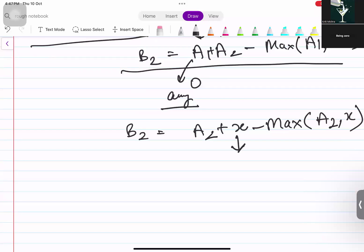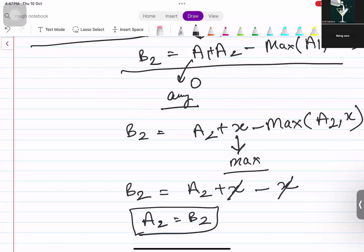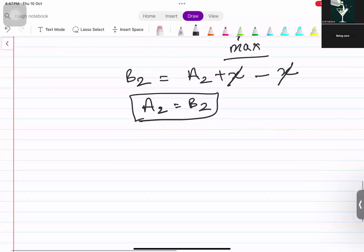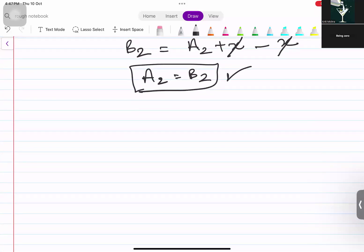If we fix X as the maximum element in the whole array, B2 would be A2 plus X minus X. X and X got cancelled. A2 would be equal to B2. We have drawn one more conclusion. In every array, the second element of both the arrays will be equal, and the first element will be 0. First element can be anything, and we thought if it is maximum, then second element is equal to B2.